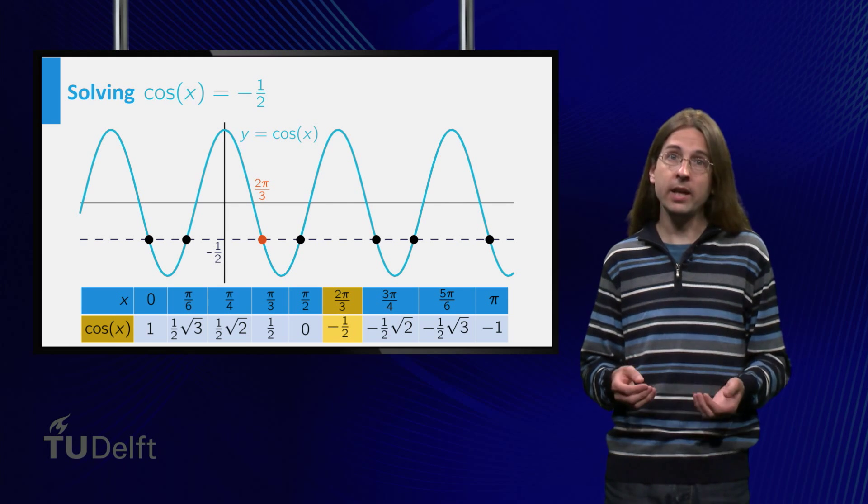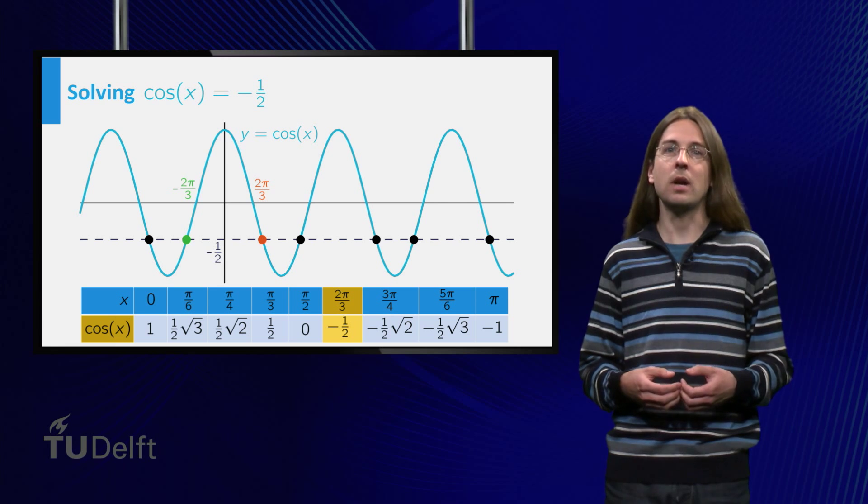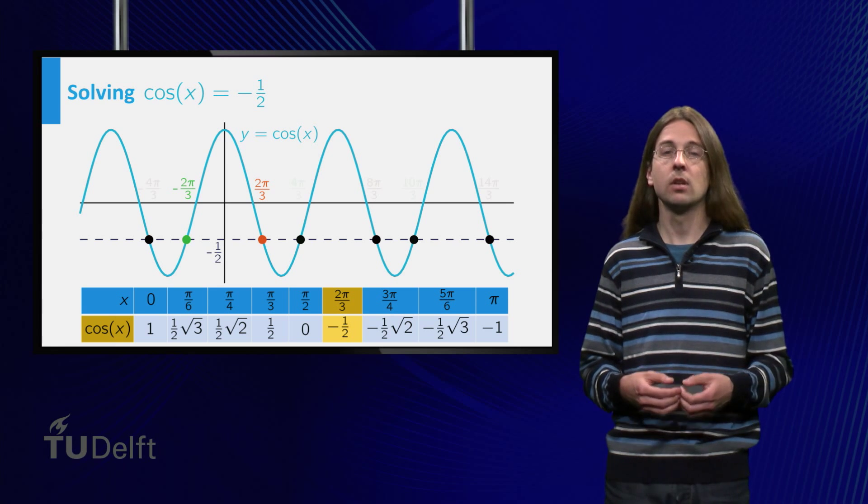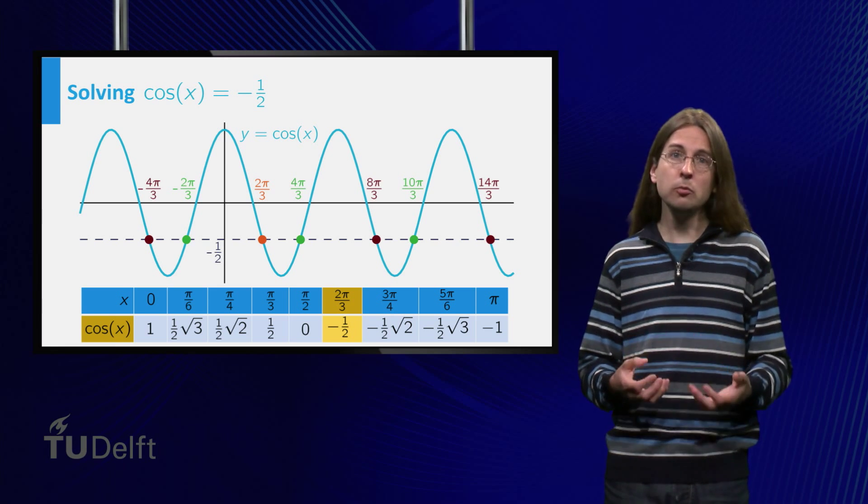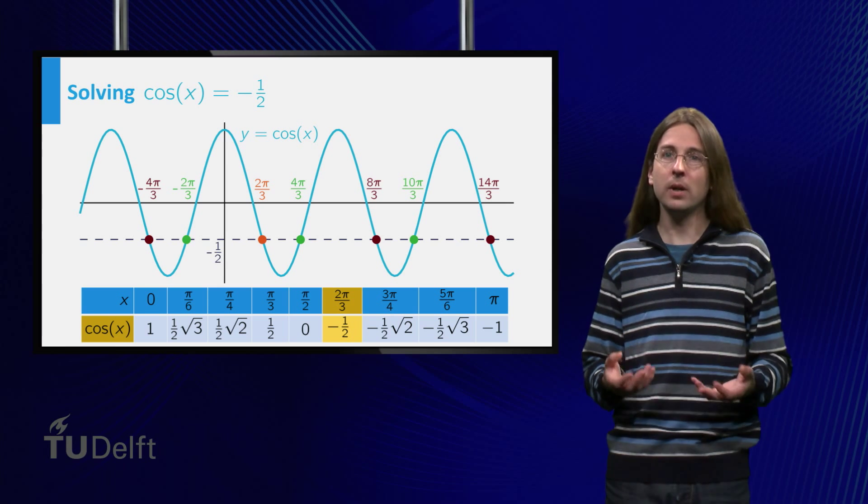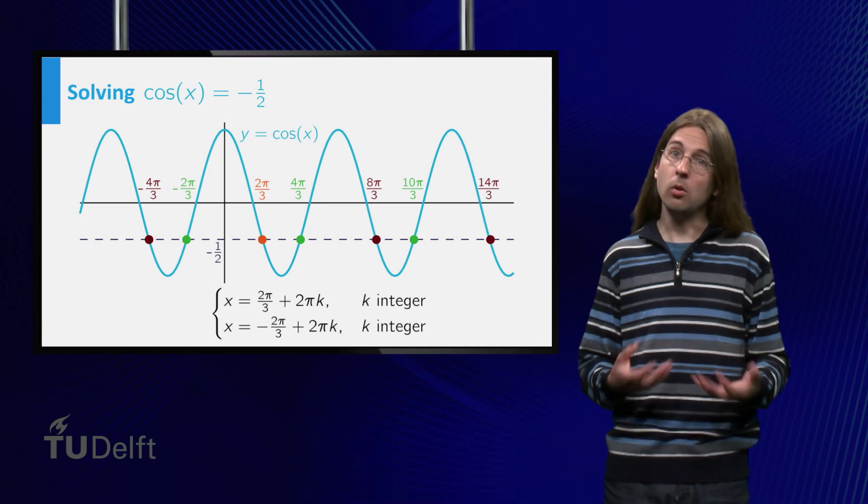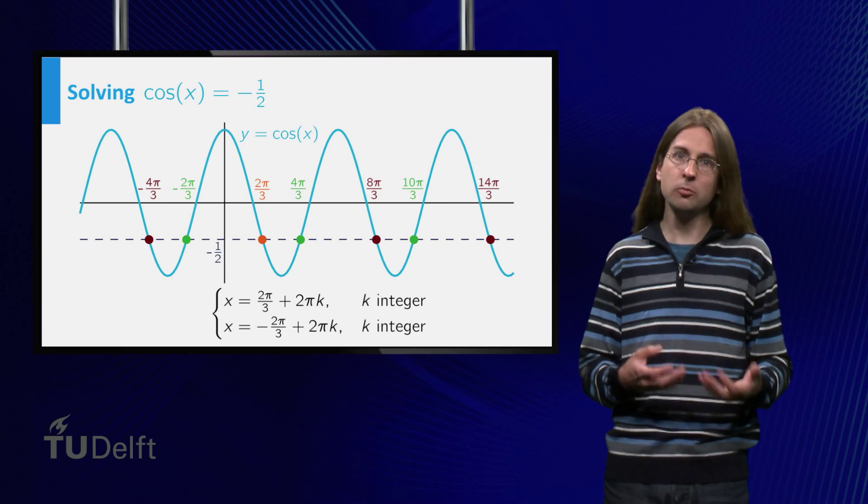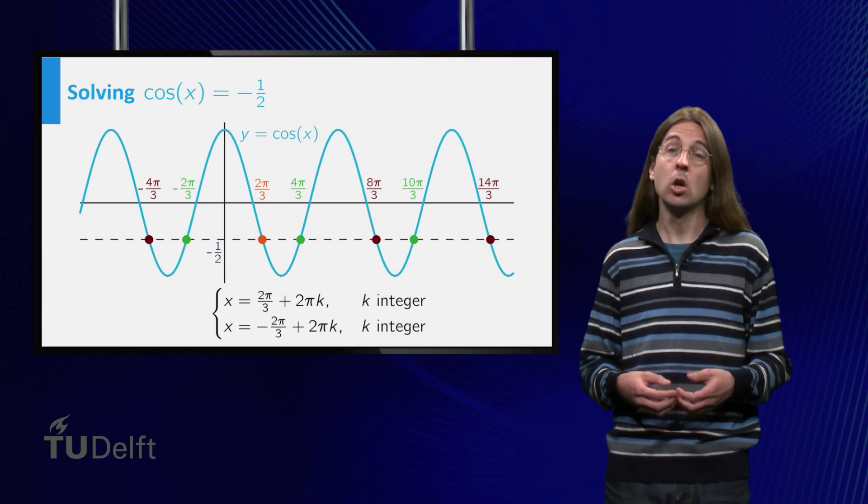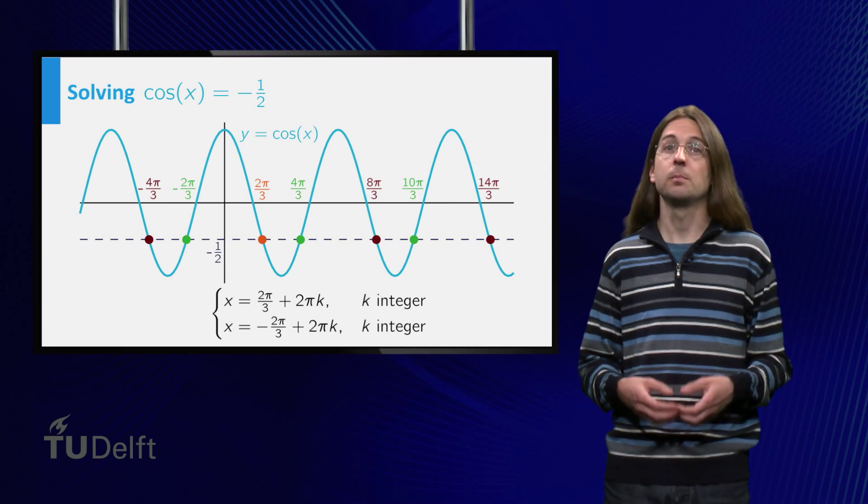Reflecting 2π/3 in the y-axis gives the green solution -2π/3. The remaining solutions are 2π shifts of ± 2π/3. All solutions can thus be expressed as 2π/3 + 2πk, or -2π/3 + 2πk.